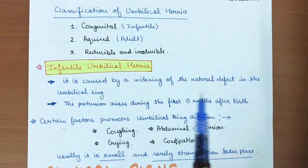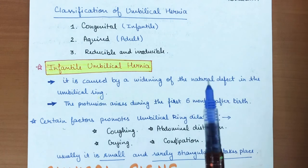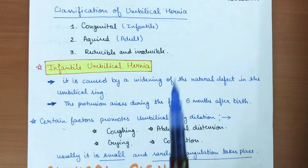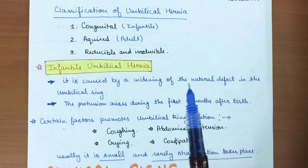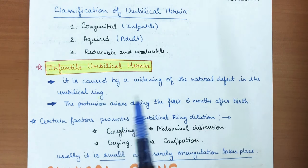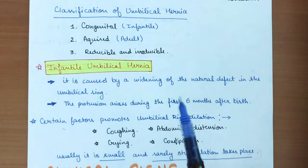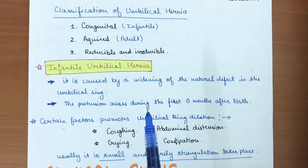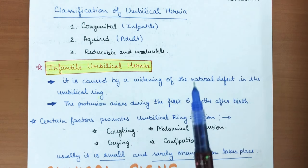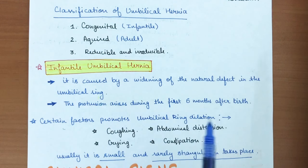Infantile umbilical hernia is caused by widening of the natural defect in the umbilical ring. During birth, if there is any natural defect in the muscular layer of the anterior abdominal wall, protrusion of abdominal structures can occur through this widened umbilical ring. This protrusion arises during the first six months after birth.